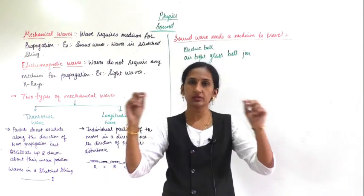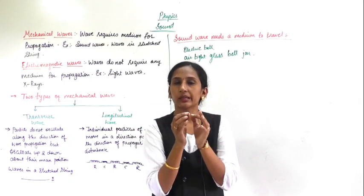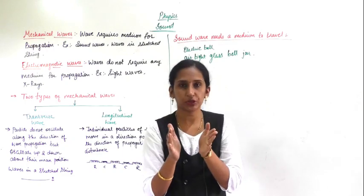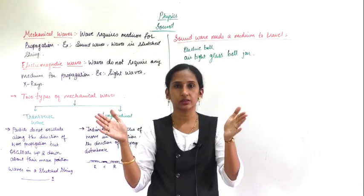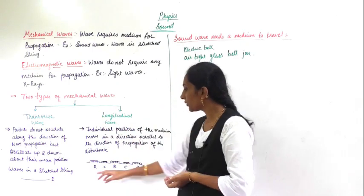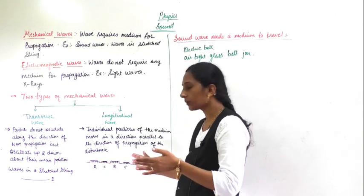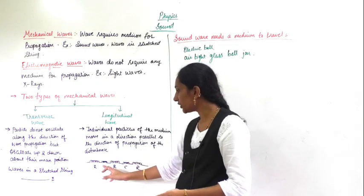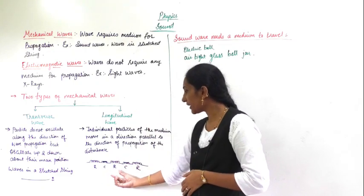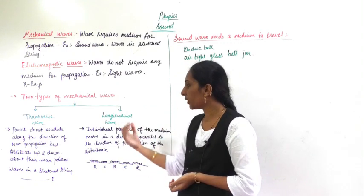As an example, if you take a spring and stretch it, it comes into a rarefaction condition. When you release it, it compresses and comes into a compression condition. You can see the stretching and compression are parallel to the direction of propagation. So compression, then rarefaction, compression, rarefaction — this is an example of a longitudinal wave.